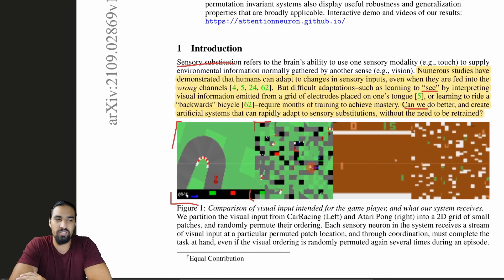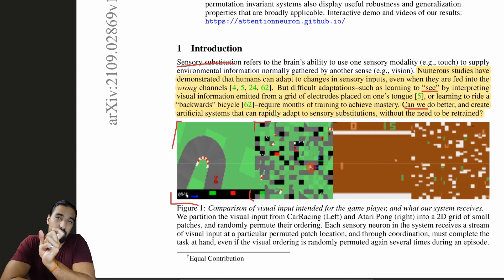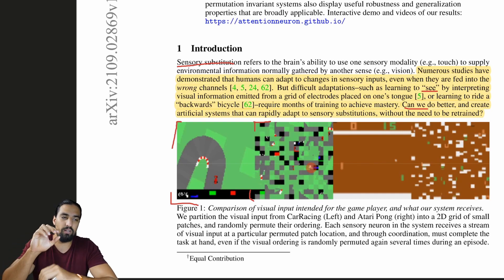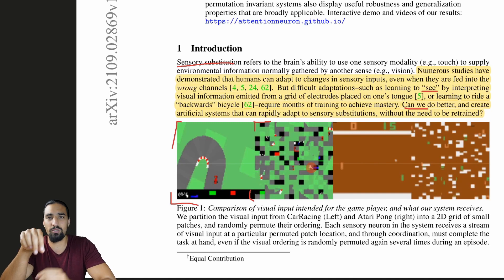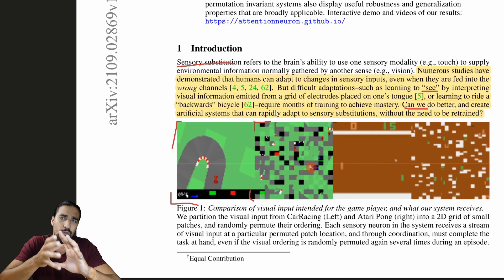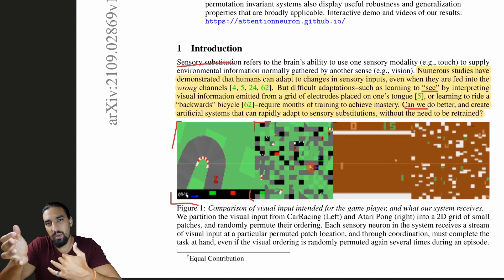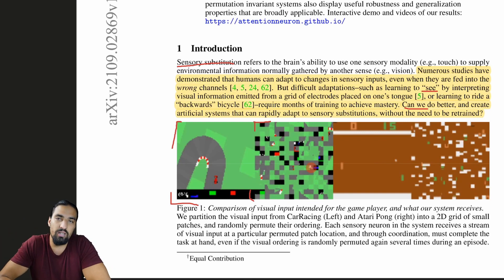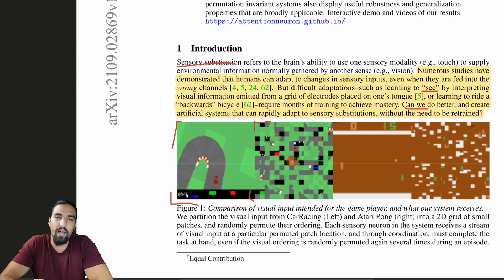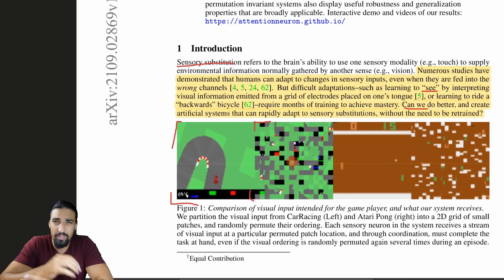Every single one of these patches will be fed into a unique neural network. All of them will be identical — the weights will be shared — but still, a single neural network will have access to only local information, just a single patch. We somehow need to integrate that information into a global representation, which can then be fed into a policy network of an RL agent so the agent can learn how to play. The second important component to bake into this model is that no matter the permutation of the patches, you want to have the same global representation — meaning we need to have permutation invariance baked in. The way this paper achieves it is using the idea from the set transformer paper.